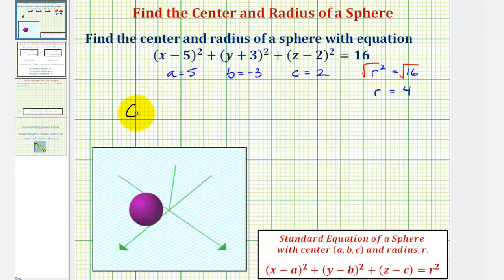And therefore, the center of the sphere has coordinates five, negative three, comma two, and the radius, or the length of the radius, equals four units.